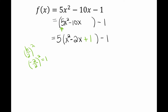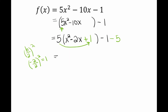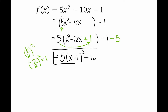Positive 1 goes inside the parentheses. But the tricky part is there's a 5 on the outside — when you distribute that 5, you have to distribute to everything inside. So the 1 needs to be multiplied by 5: 1 times 5 is 5, and I put minus 5 on the outside — the opposite. Now let's factor: square root of the first is x, sign of the middle, then square root of the last term which is 1. Grouping together negative 1 minus 5 gives me negative 6. My vertex will be 1, negative 6.